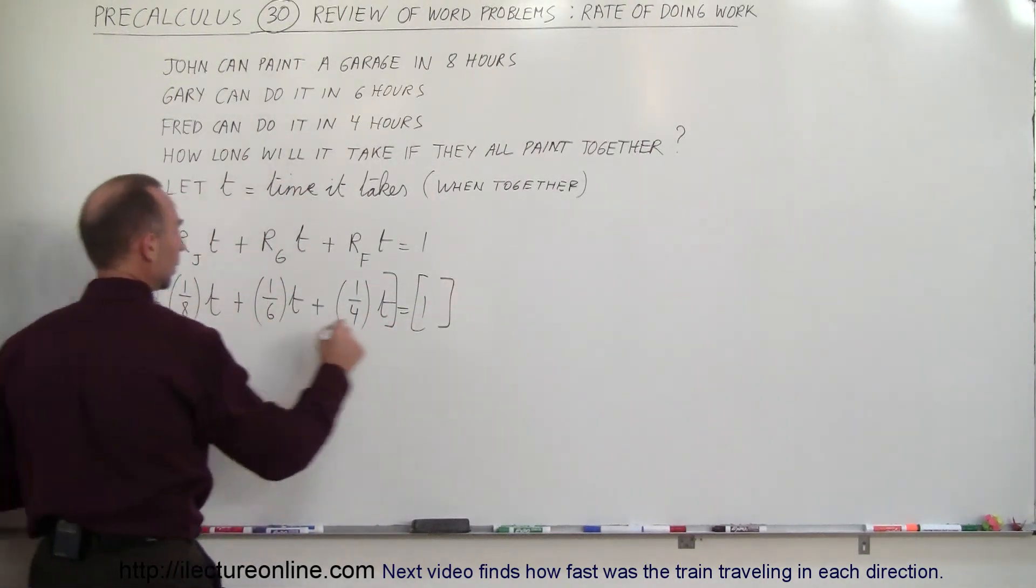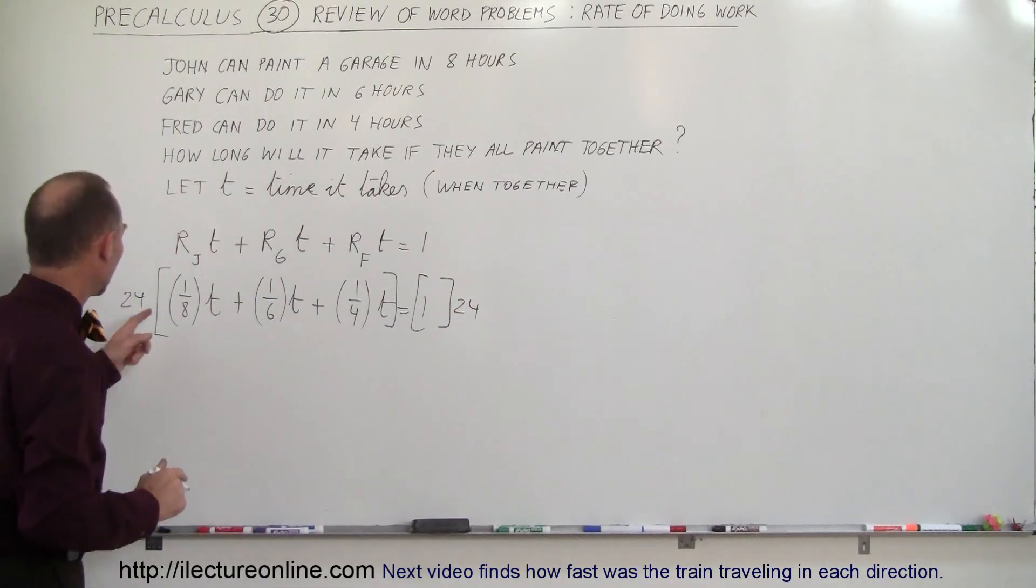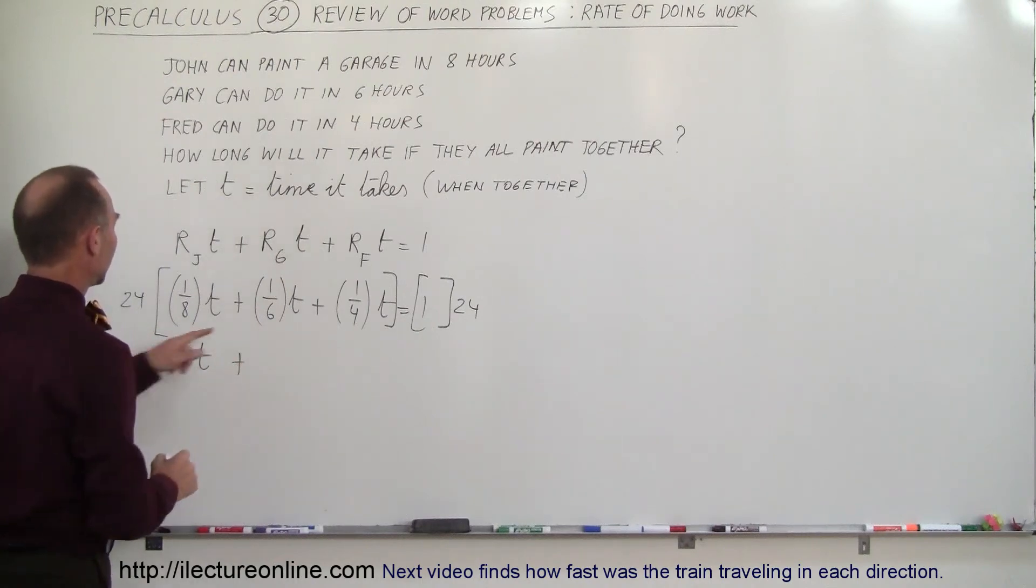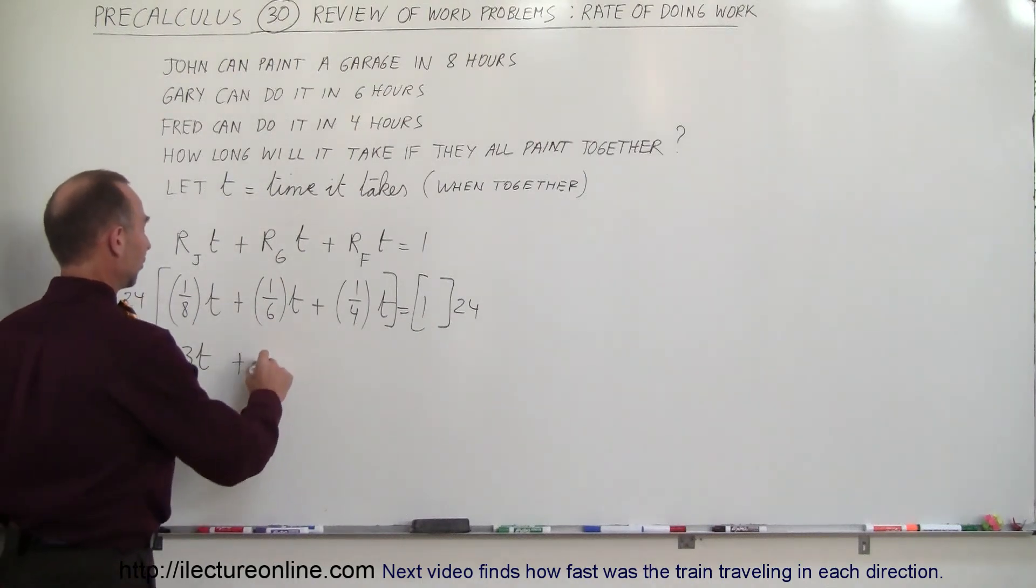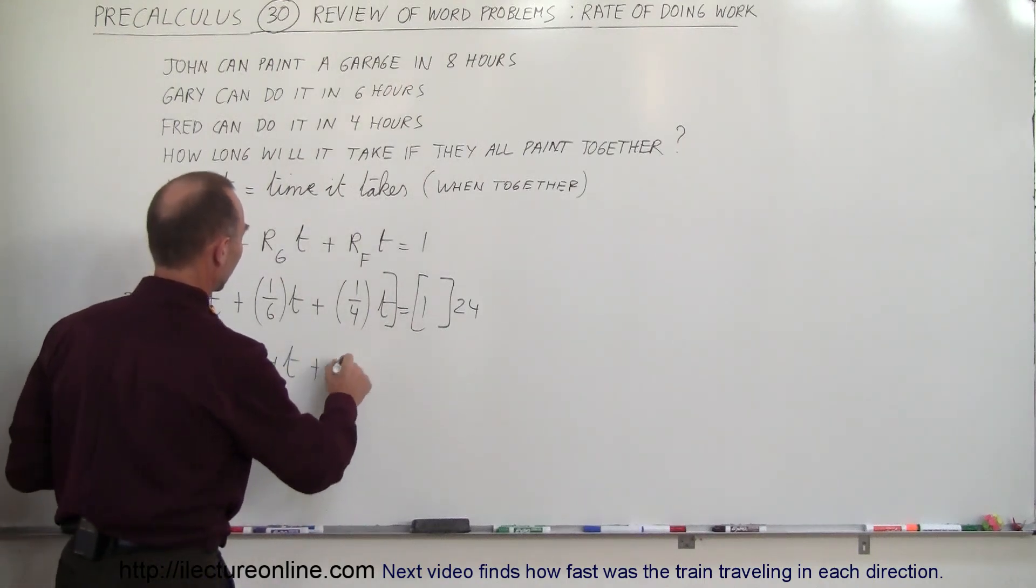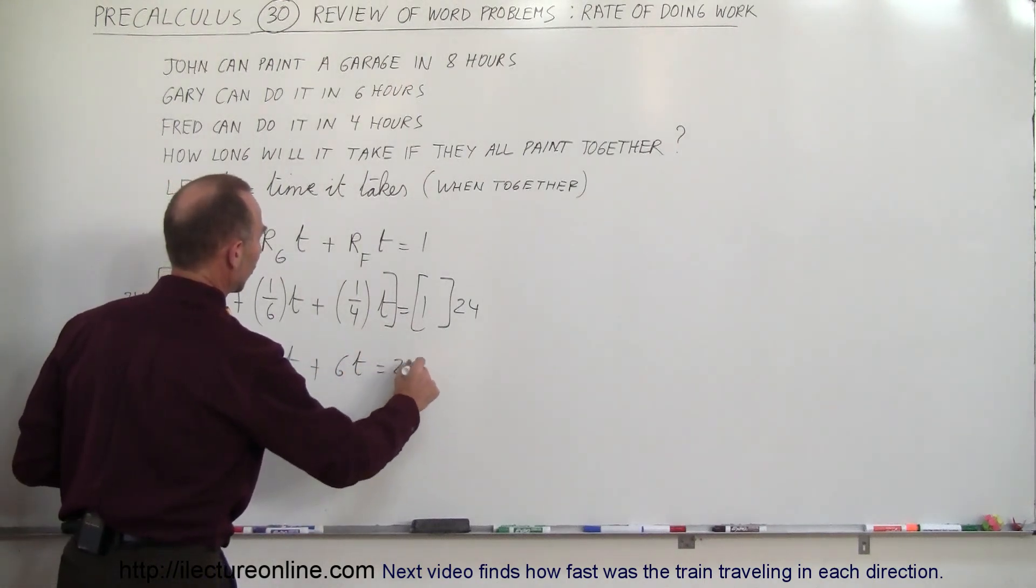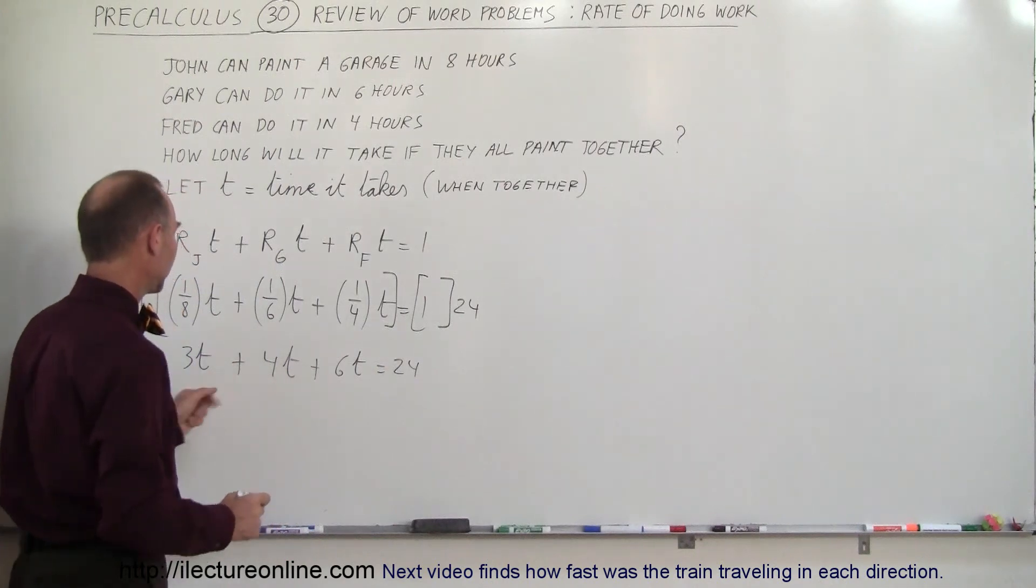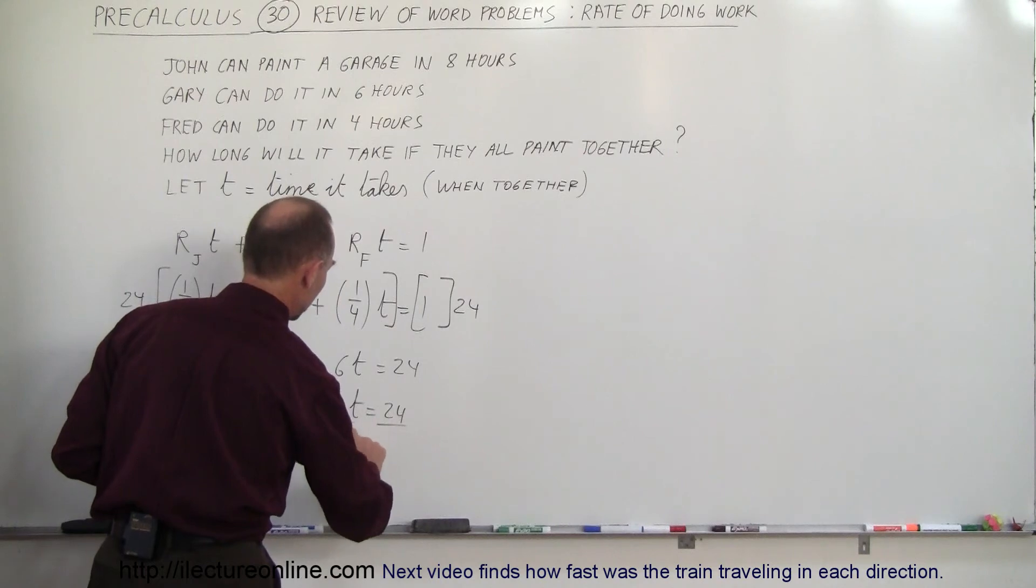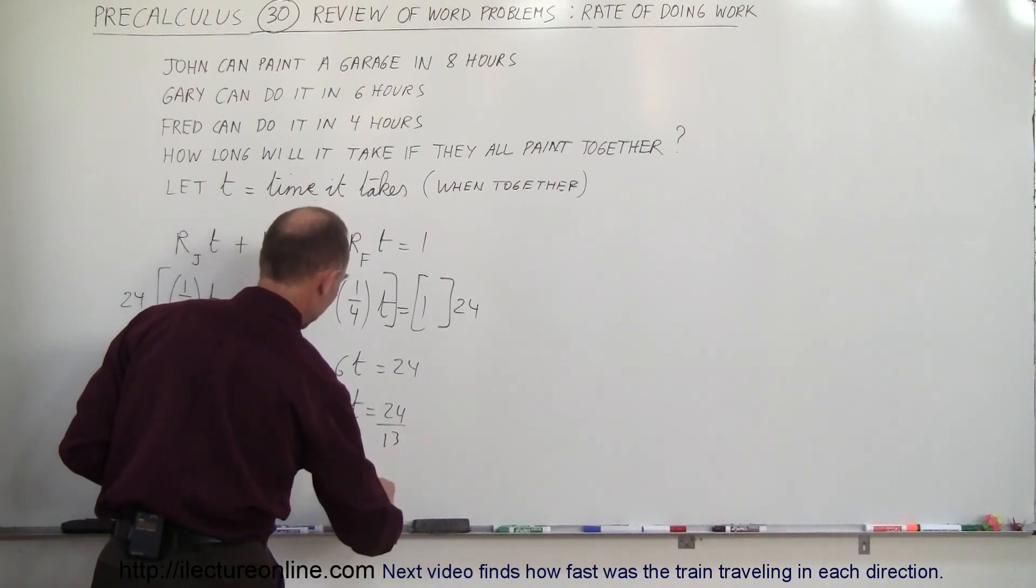So eight goes in twenty-four three times, so we have three t plus six goes in twenty-four four times, four t plus four goes in twenty-four six times, so six t equals twenty-four. So four plus six plus three, that is thirteen t equals twenty-four. Divide both sides by thirteen and we get t is equal to twenty-four divided by thirteen.